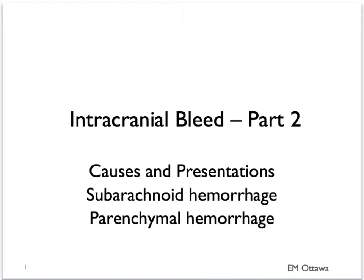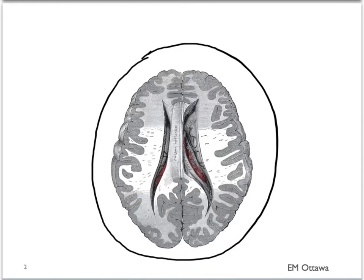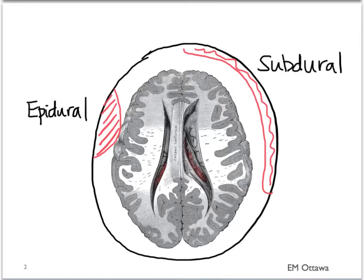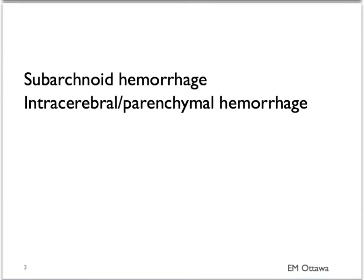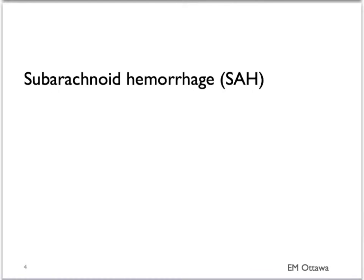Welcome back to intracranial bleed part 2. In this section, we will discuss subarachnoid hemorrhage and parenchymal hemorrhage, and their presentations. As we talked about before, there are four types of intracranial bleed: epidural, subdural, subarachnoid bleed, and intracerebral or parenchymal bleeds. We will now focus on subarachnoid hemorrhage.